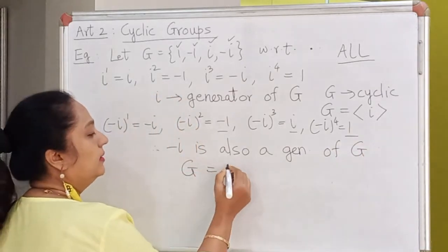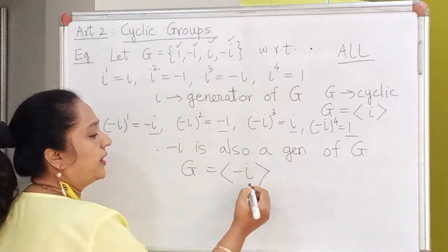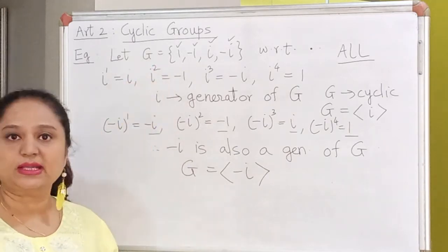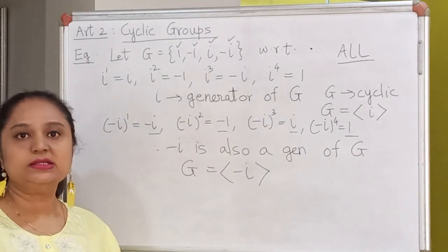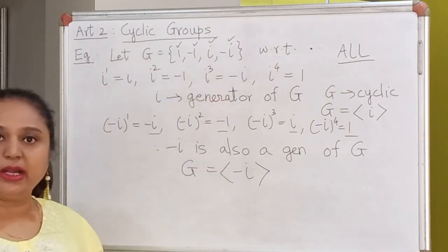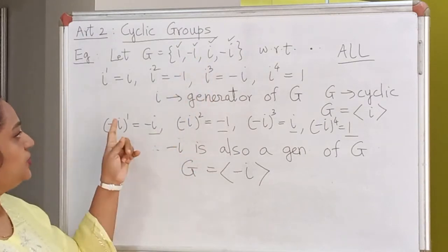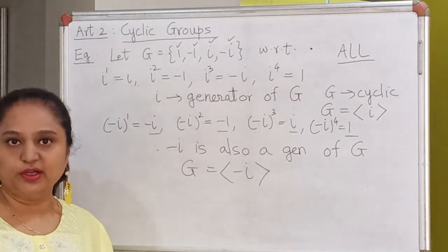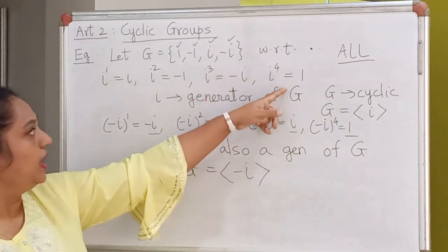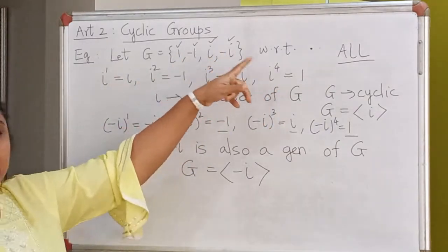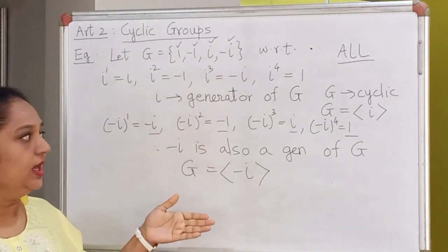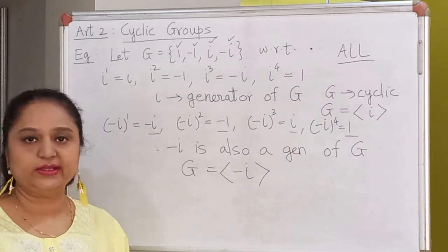We can also write G as the cyclic group generated by -i. A group will be called cyclic if it has at least one generator — that means there should be at least one element in the group which generates all the elements of the group when we take its integral powers. From this example, we see that a cyclic group can have more than one generator: i is a generator and -i is also a generator.